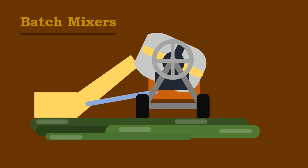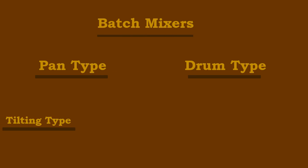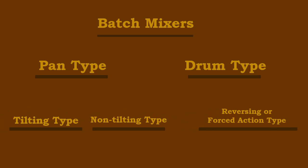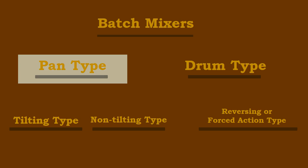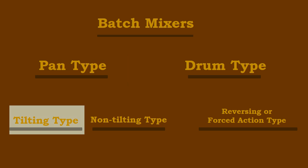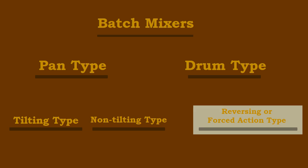In normal concrete works, batch mixers are generally used. Batch mixers are of pan type or drum type. The drum type is further classified as tilting, non-tilting, reversing, or forced action type. Each type will be discussed one by one in future videos.